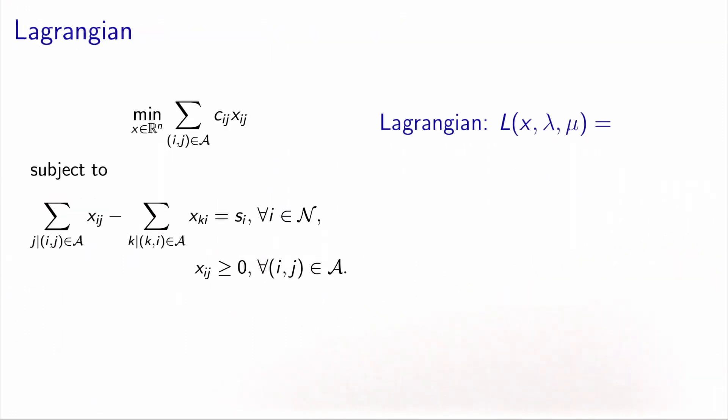In order to write the Lagrangian of the problem, we first need to write the inequality constraints as less or equal, which means that we need to write minus xij as less or equal. Then we need to associate a dual variable with each constraint. We'll call it lambda for the equality constraint, so we have one lambda for each node i, and we will call it mu for each inequality constraint. So we will have muij for each arc ij in the network.